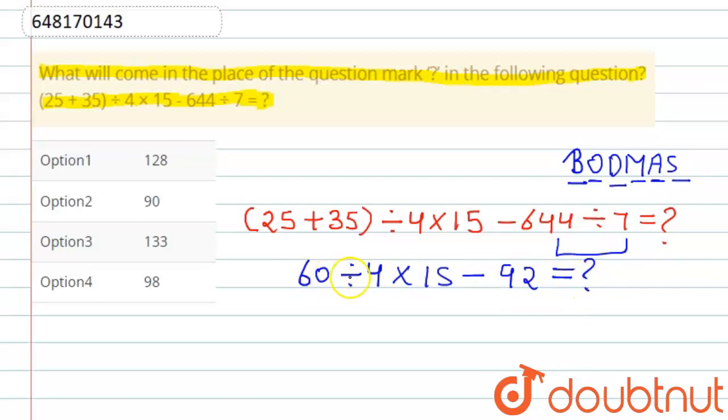Now we have division: 60 divided by 4, that is 15. So 15 into 15 minus 92 equals question mark. Now multiplication: 15 into 15, that is 225 minus 92 equals question mark.